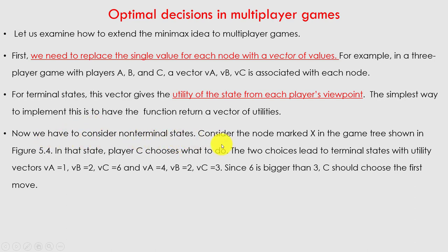Consider a non-terminal state: the node marked X in the game tree. In that state, player C chooses what to do. The two choices lead to terminal states with utility vectors (Va1, VB2, Vc6) and (Va4, Vb2, Vc3). Since 6 is bigger than 3, C should choose the first move. This is how we take the optimal decision in the case of multiple players.